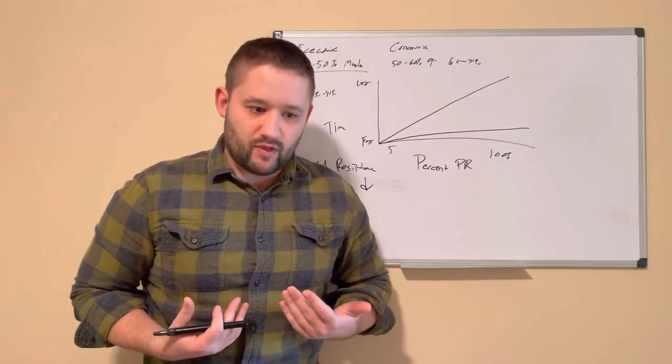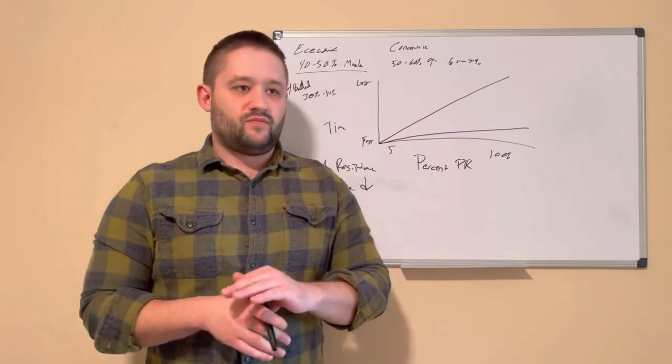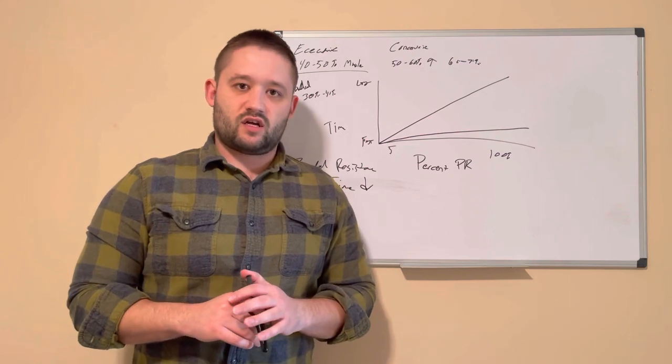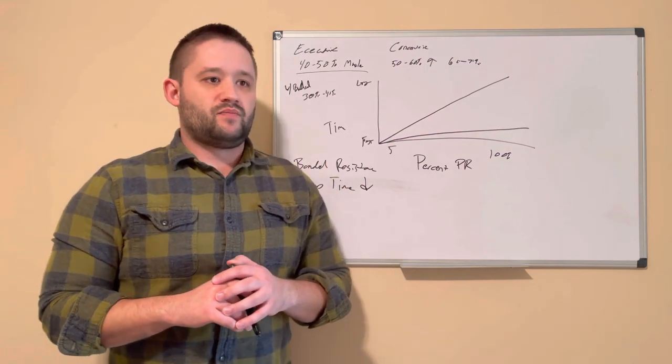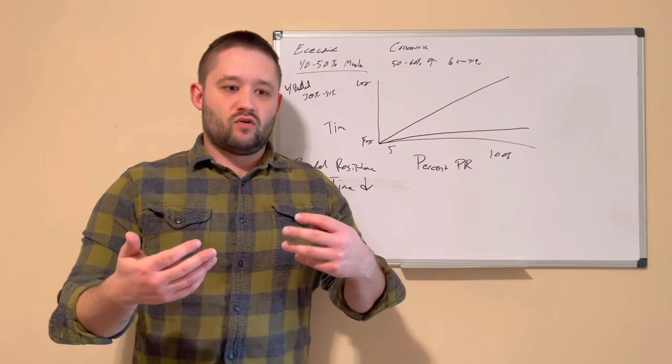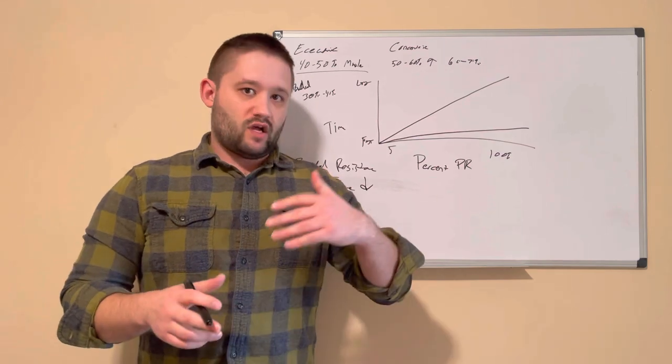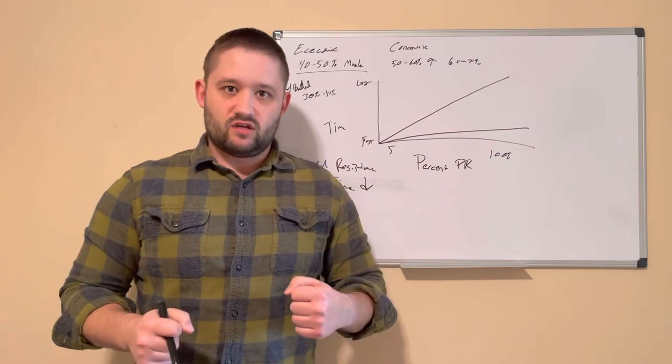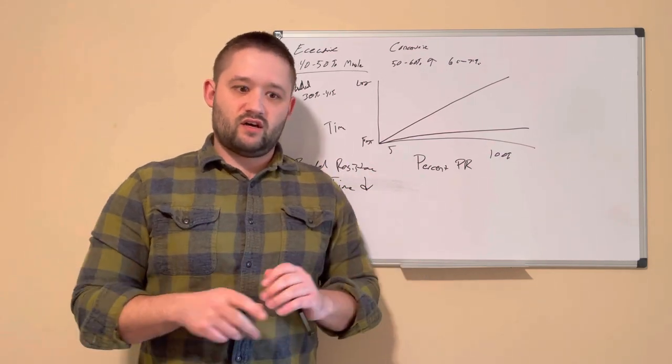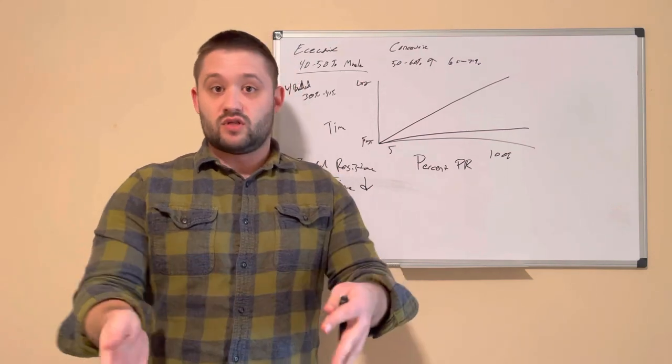We don't want to drop the bar in the eccentric phase because that's a huge amount of injuries that can occur and a lot of other issues with that. So we don't want to let the bar go and just catch it at the bottom, but we want to decrease the time that we're sitting under eccentric so we can utilize all that energy to get the weight back concentrically to the top of the movement.